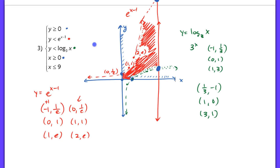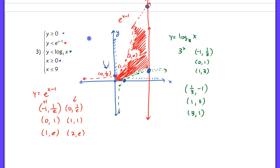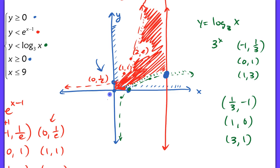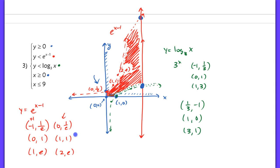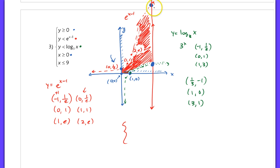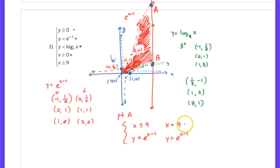Normally we'd have to solve a full system, but in this case it's very basic. Let's label the remaining points A and B. To find point A, I'm using the system x equals 9 and y equals e to the x minus 1. Since x already equals 9, I substitute that in and get y equals e to the 9 minus 1, which is e to the 8th. So coordinate A is (9, e to the 8th). Make sure all these points are clearly labeled on your test and homework.